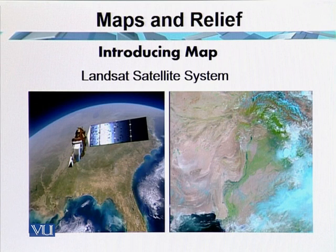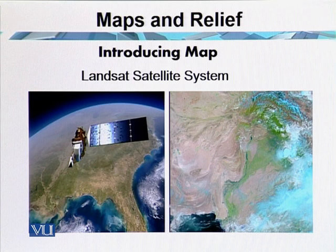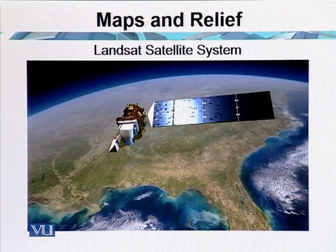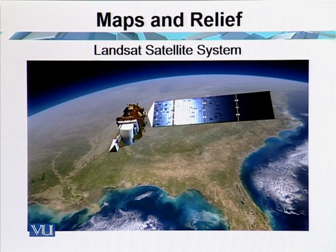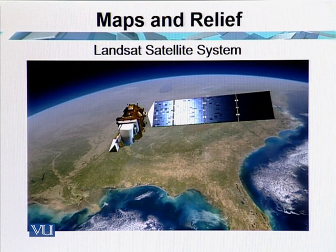The first Landsat system was launched on February 11, 1972, and Landsat 8 was launched in 2013. This is a picture of the satellite, and it is actually the most advanced technique of taking pictures of the planet Earth. The satellite is a very important remote sensing tool.